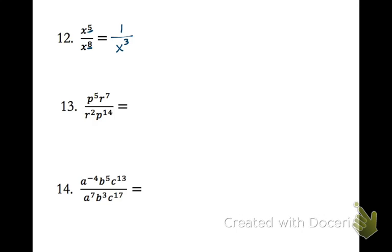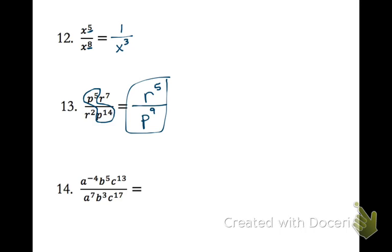For number 13, we have p's and r's. For the p's, we have exponent 14 on the bottom and 5 on the top. Taking 14 minus 5 gives 9, and the bigger exponent is on the bottom, so p to the ninth stays on the bottom. For the r's, we have r to the seventh on top and r squared on the bottom — 7 minus 2 is 5 — so r to the fifth goes on top. Now we have one r and one p and can't simplify further, so we're done.